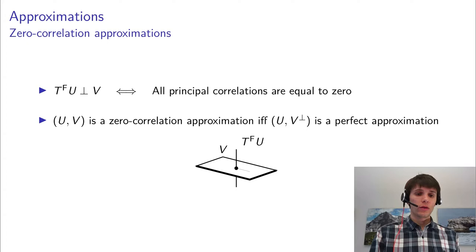The idea is essentially that we have a sequence of intermediate masks, and these define a number of one-round approximations. We assume that our function is actually a composition of smaller functions f_i, called round functions. We have a linear approximation for each of those with a known correlation. And now we want to glue them together in order to obtain an approximation for the composition of all those functions. The question is of course what is the correlation of that approximation.